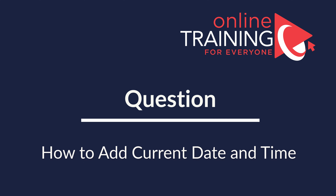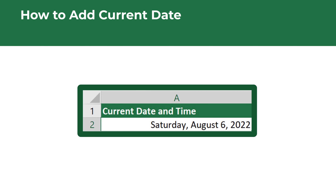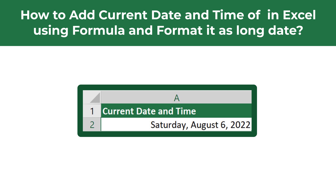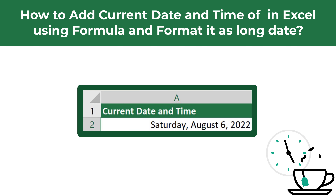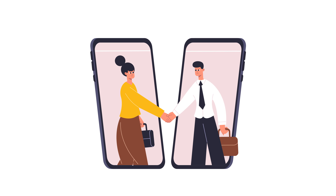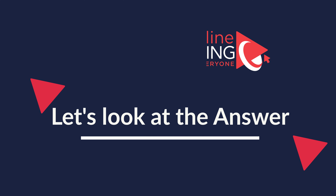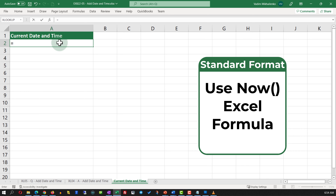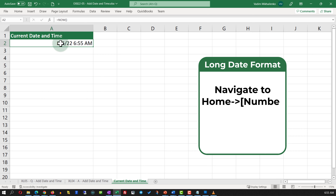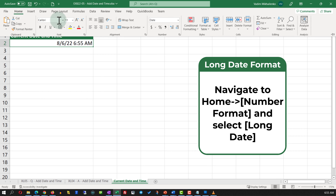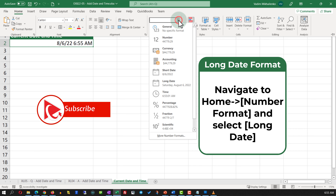Here's an interesting Microsoft Excel test question which tests your knowledge of Excel formulas. You need to show how to add the current date and time in Microsoft Excel using a formula, and then format it as a long date. The solution is very simple: all you need to do is type the NOW function. The NOW function returns the date and time in the standard format. To format it as a long date, navigate to the Home ribbon tab and in the Number Format section select Long Date.